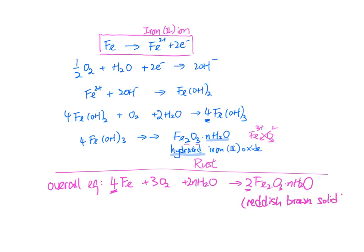That is rust. Remember the first equation and the overall equation — these are the two most important ones. You will mostly be asked for just these two equations. The intermediate steps are only needed if you're aiming for full marks, as they are rarely tested.